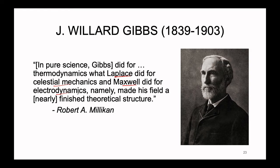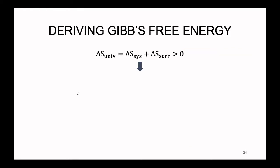What we're going to continue with in this lecture specifically is how Gibbs wrapped up everything thus far with a really nice bow, creating, as Milliken put it, a nearly finished theoretical structure for the understanding of spontaneous reactions. We're going to derive what is known as Gibbs free energy, starting with the second law of thermodynamics. Our goal is to create an equation where all of the subscripts correspond to that of the system, so we don't have to figure out anything about the surroundings or the entire universe.